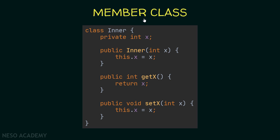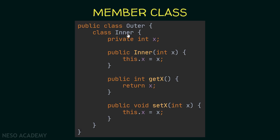We will talk about member classes. Have a look at this class called 'inner' — it has a private integer x, a constructor, a getter, and a setter. Now let's put this class inside another class called 'outer'. The inner class is now a member class inside the outer class. When we create a class like this inside another class without a visibility modifier, it has default visibility.